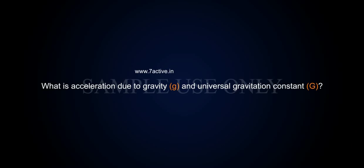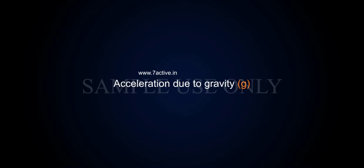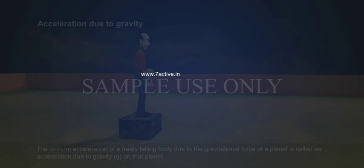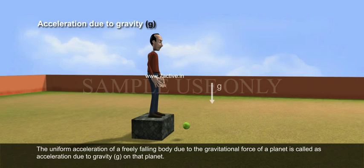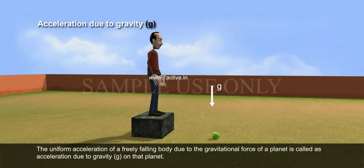What is acceleration due to gravity and universal gravitation constant? Acceleration due to gravity: The uniform acceleration of a freely falling body due to the gravitational force of a planet is called as acceleration due to gravity (g) on that planet.